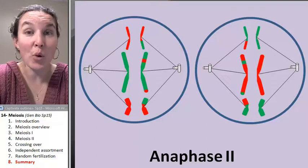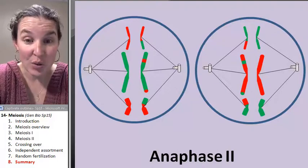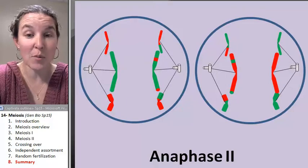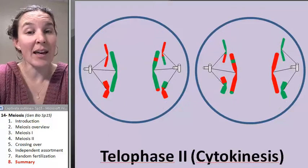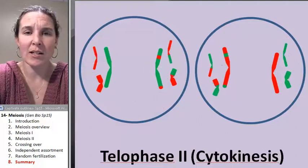Our spindle fibers are going to do the job. The centrioles are going to pull the sisters apart. And that's anaphase II that we're pulling our sisters apart, pulling them to the poles. Let's go ahead. We've got telophase going on. Let's do a little bit of cytokinesis.